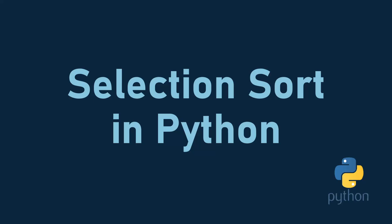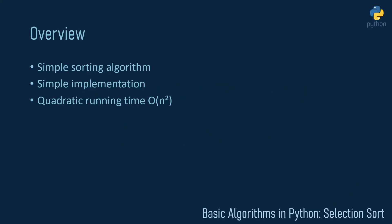Hey everyone and welcome to my tutorial on selection sort and how you can implement this algorithm in Python. Selection sort, like insertion sort, is a simple sorting algorithm with a simple implementation that is easy to understand, but on the downside it has quadratic running time, which makes it a bit slower compared to more complex sorting algorithms like merge sort. I want to show you a quick example that should clarify how this algorithm works, and afterwards we can jump into the implementation.